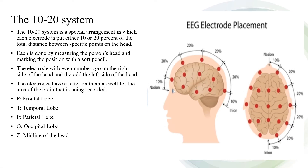The 10-20 system is a special arrangement in which each electrode is placed either 10 or 20% of the total distance between specific points on the head. Each position is determined by measuring the person's head and marking the position with a soft pencil. Electrodes with even numbers go on the right side of the head and odd numbers on the left side. The electrodes also have letters indicating the brain area being recorded: F for frontal lobe, T for temporal lobe, P for parietal lobe, O for occipital lobe, and Z for the midline of the head.